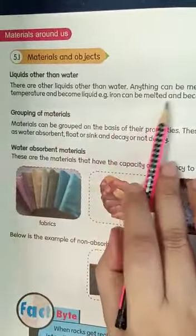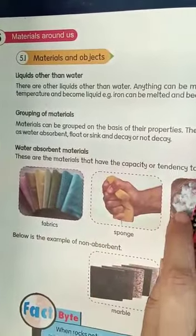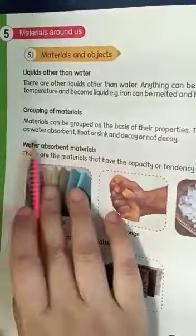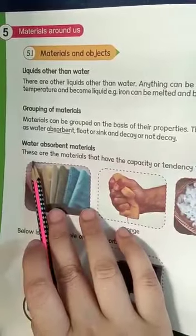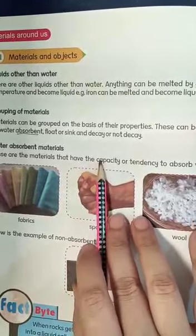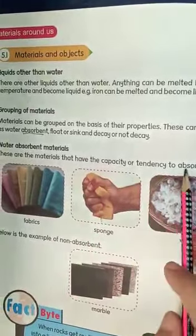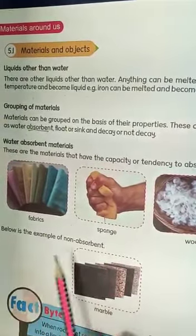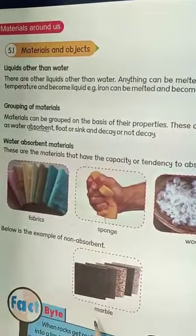Grouping of materials. Materials can be grouped on the basis of their properties. These can be grouped as water absorbent, float or sink, and decay or not decay. Water absorbent materials are those that have the capacity or tendency to absorb water, like fabric, sponge, and wool. An example of a non-absorbent material is marble.